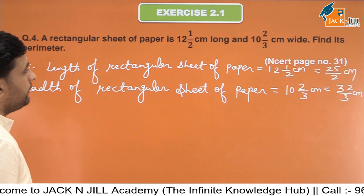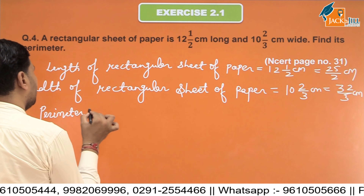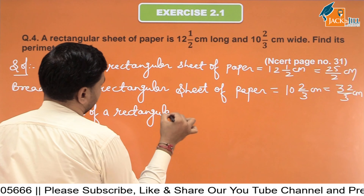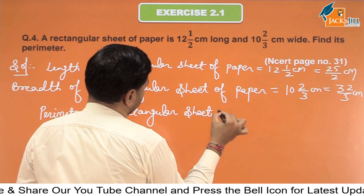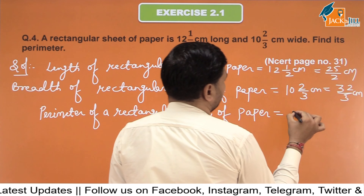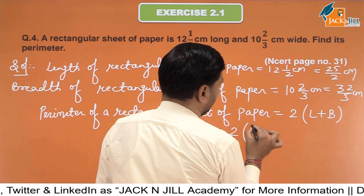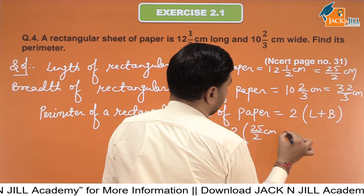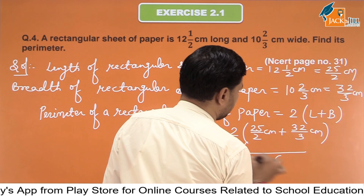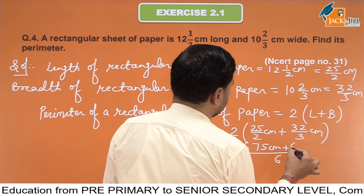We will find the perimeter of a rectangular sheet of paper. Perimeter of a rectangular sheet of paper equals 2 times (length plus breadth). Our length is 25/2 and breadth is 32/3. The LCM of 2 and 3 is 6. In the table of 2, 6 comes 3 times: 3 times 25 is 75. In the table of 3, 6 comes 2 times: 2 times 32 is 64 centimeter.